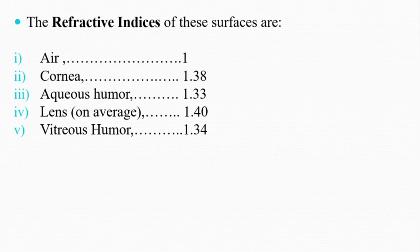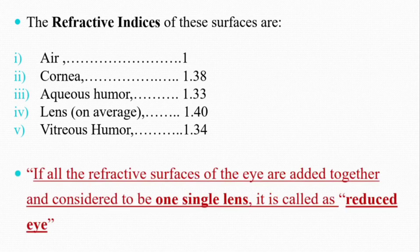For practical purposes, we consider all these refractive surfaces as one surface to ease calculation for different refractive errors. As we will study in the next videos, there are various refractive errors and we have to grind lenses and make glasses. So for ease of calculation, we consider a single refractive surface to be present in the eye. When all refractive surfaces are added together and considered as a single lens, such an imaginary eye is called a reduced eye — because we have reduced the various refractive surfaces into one.